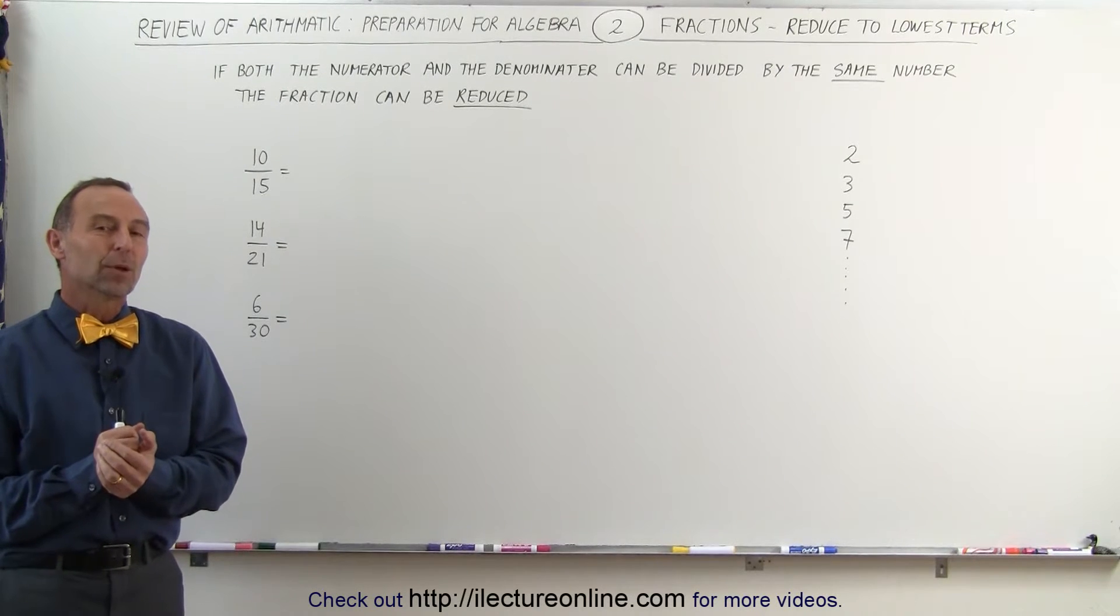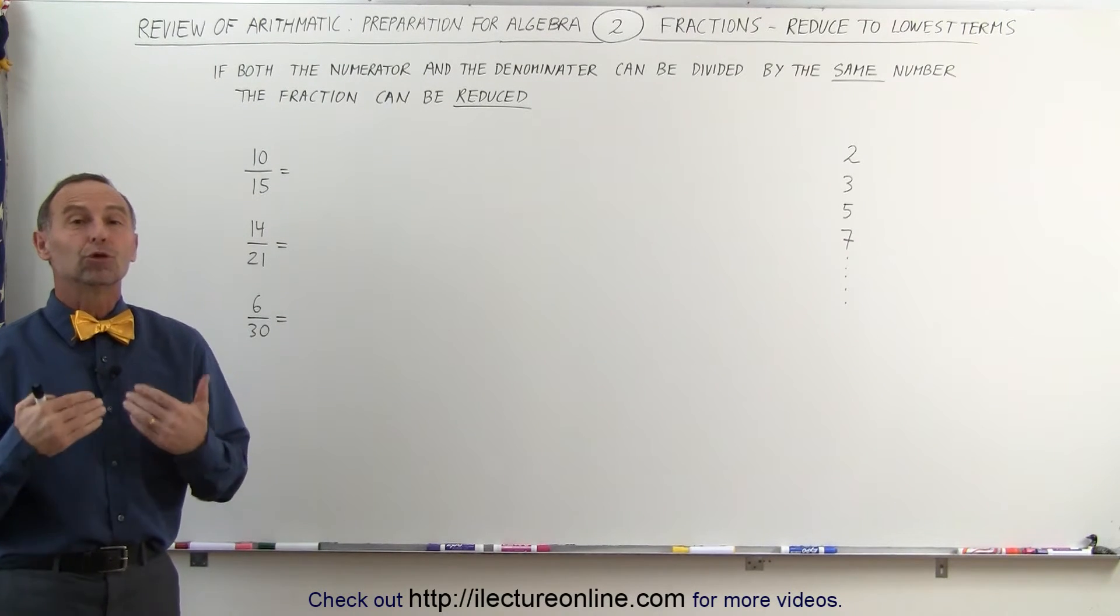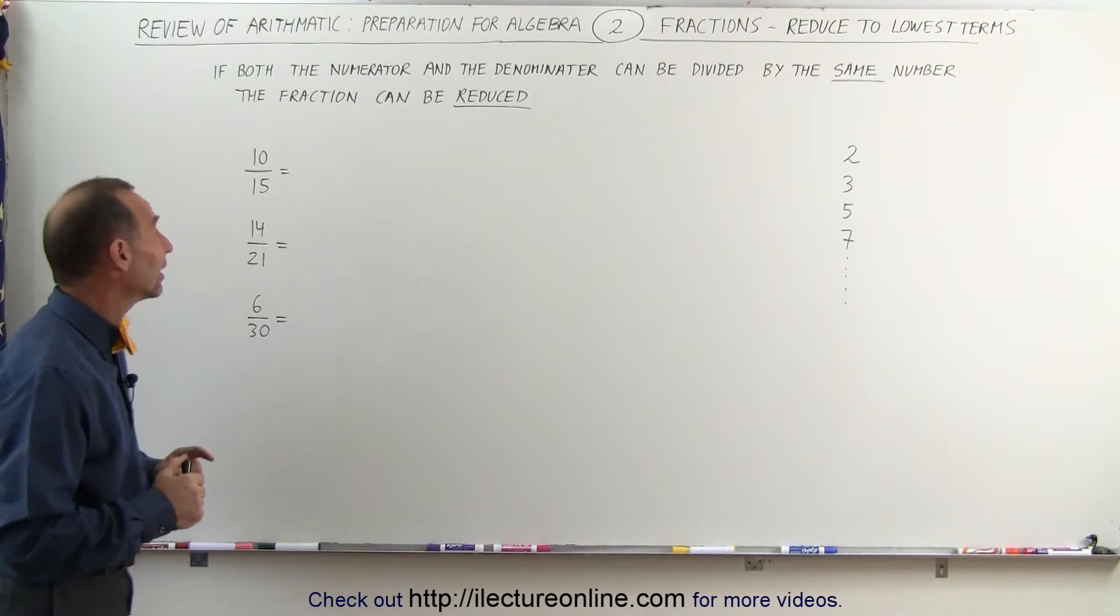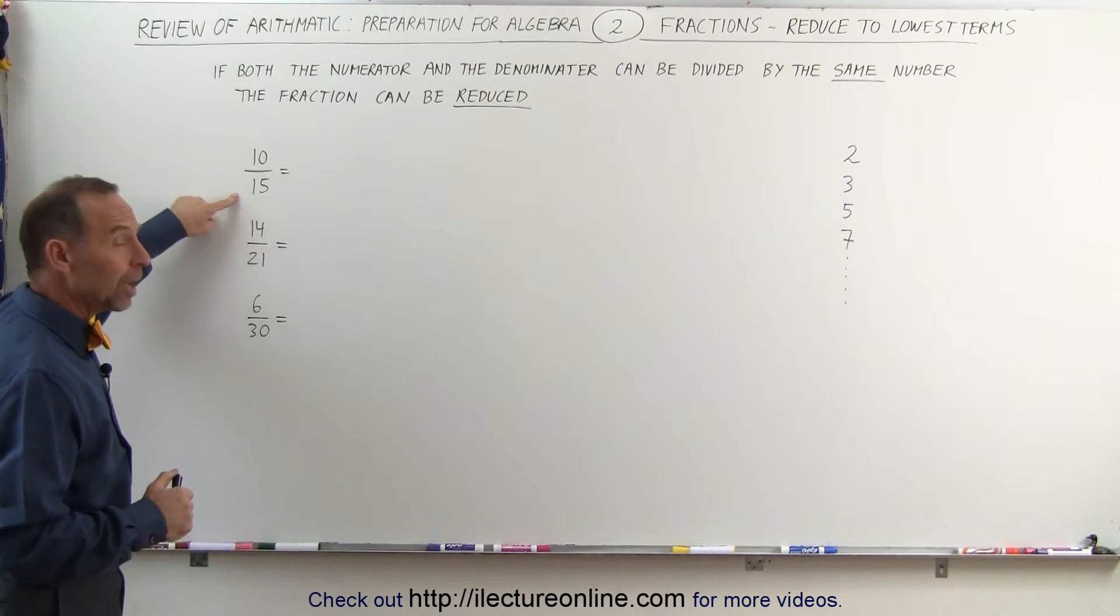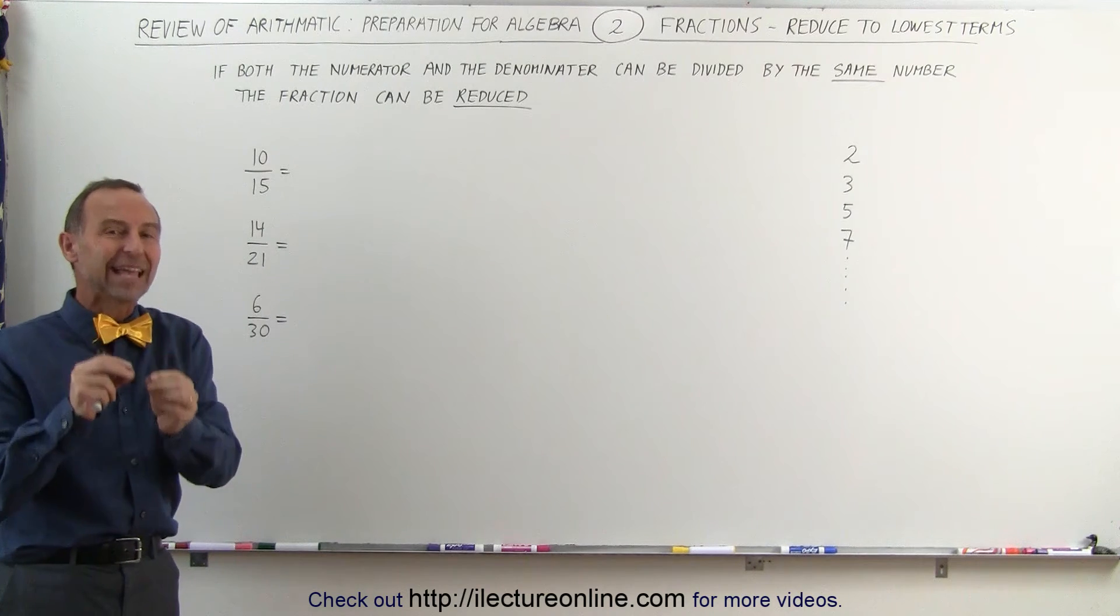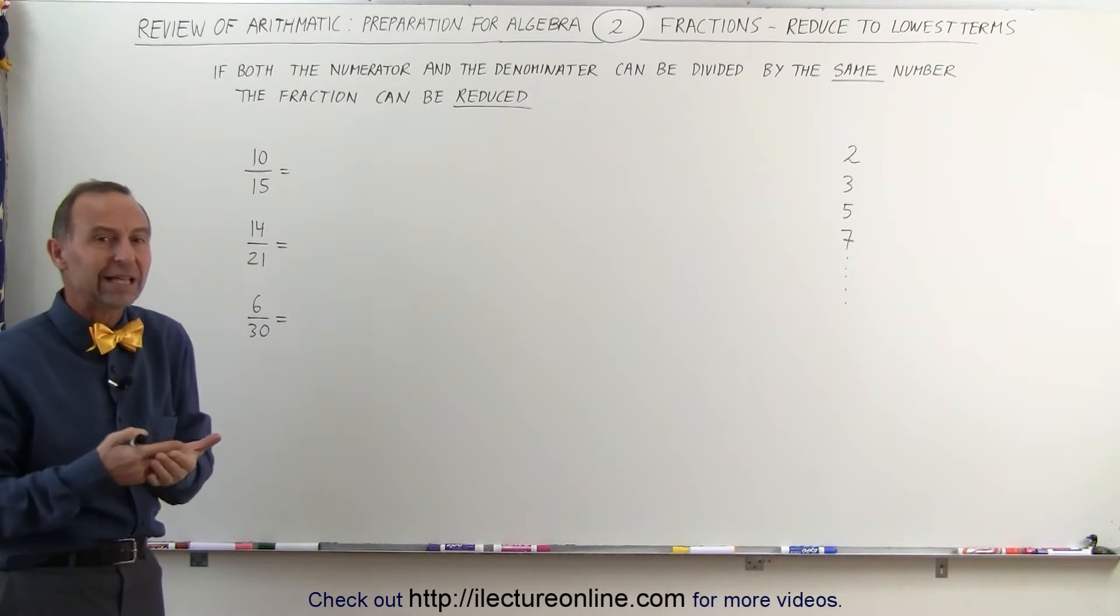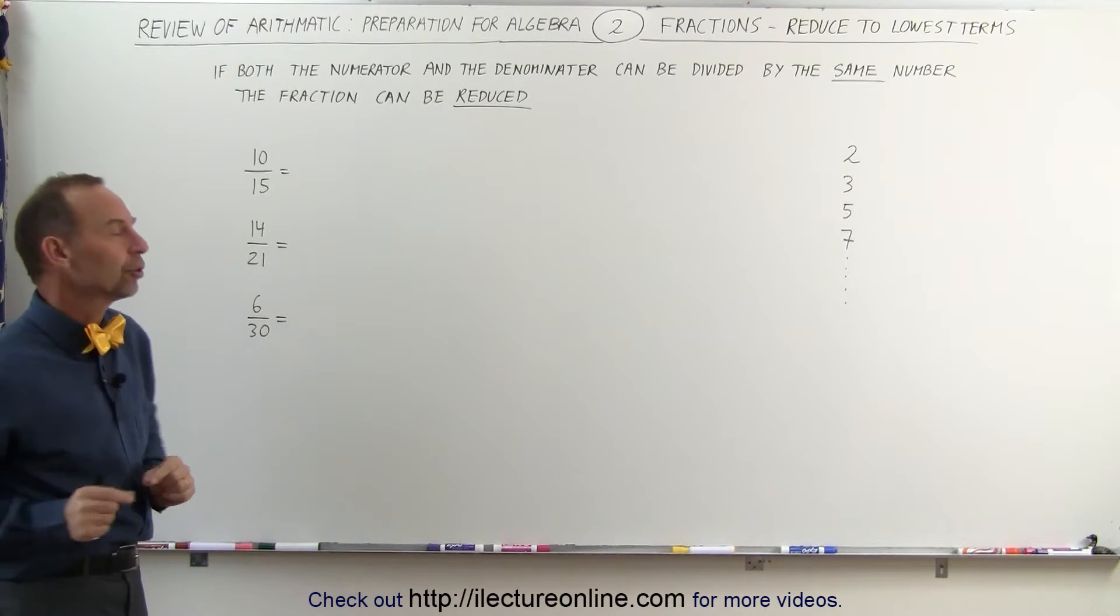Welcome to Electronline. What do we mean when we say reduce a fraction to its lowest terms? What that means is that if both the numerator and the denominator can be divided by the same number, we can reduce the fraction. We can write the fraction in simpler terms with smaller numbers.